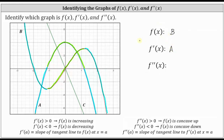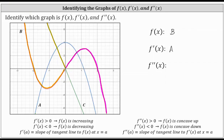Now let's analyze the concavity of function b or f of x. Starting on the left, function b is concave up when x is less than zero, and concave down when x is greater than zero. Comparing this to function c, the linear function, function c is positive when x is less than zero — the same interval where function b is concave up — and negative when x is greater than zero, the same interval where function b is concave down. This verifies that function c must be the second derivative, or f double prime of x.